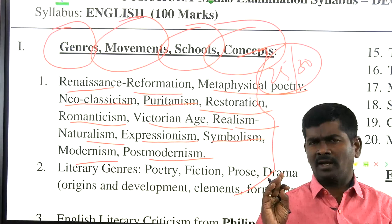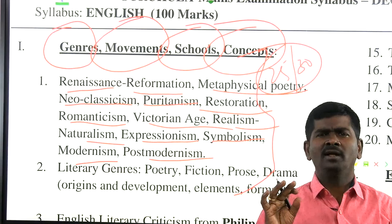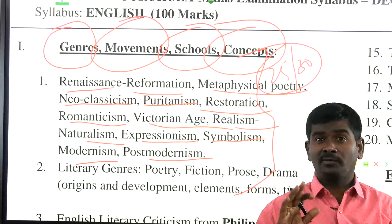University Wits include John Lyly, Robert Greene, Thomas Kyd, Thomas Nashe, Thomas Lodge, George Peele, and Christopher Marlowe — the popular University Wits, also known as the University School of Dramatists. You need some in-depth knowledge about them.